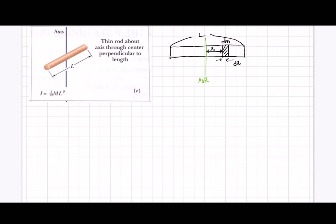So you can first remember that lambda is equal to m over L, which is dm over dx, and so dm equals lambda dx.